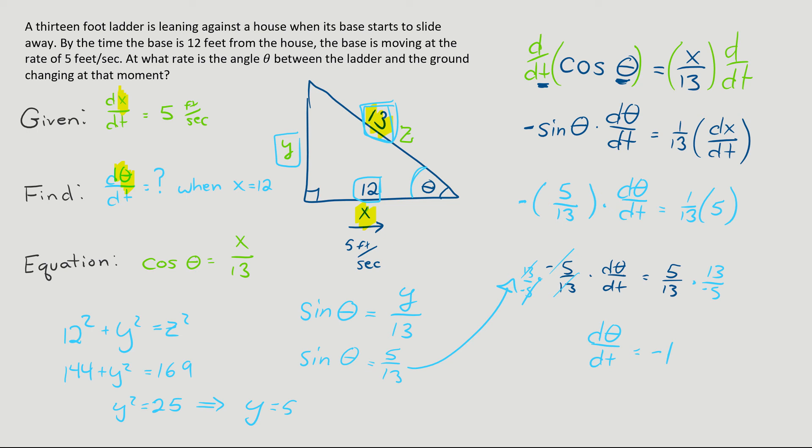And we got to put our units on this. So as my angle is changing and we're dealing with radians in calculus, you are dealing with radians unless otherwise specified. So I have negative 1 radians per second, and that would be my units. And that is how fast the angle is changing or decreasing. And it makes sense because the angle is getting smaller. So it makes sense that we have a negative rate.